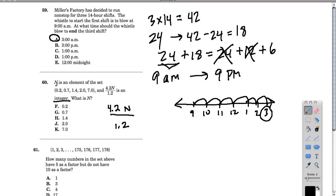In this next problem, we know this number n is an element of the set 0.2, 0.7, 1.4, 2, and 7. It's saying that there's a number that is an element of this group, so it's one of these numbers. And if you took 4.2 and multiplied it by n, and then divided it by 1.2, you would get an integer, which is a positive or negative whole number.